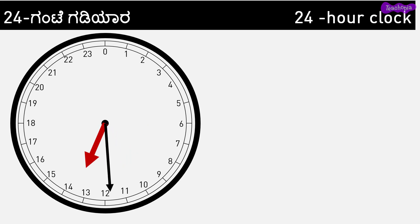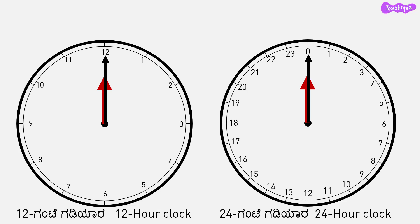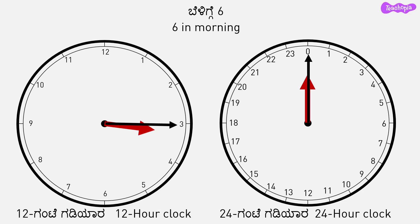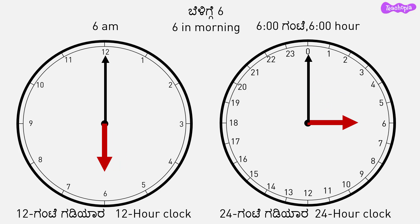Let us see some examples of reading time in both formats. For 6 in the morning: in the 12 hour clock it will be 6 a.m., and in the 24 hour format it will be 06:00 hours. In both clocks, the hour hand will be at 6.